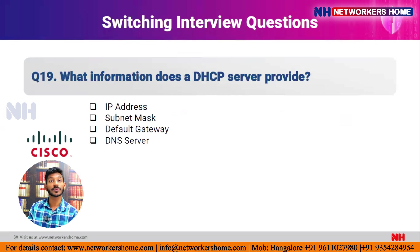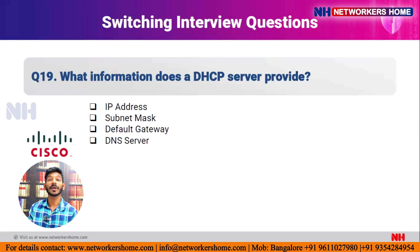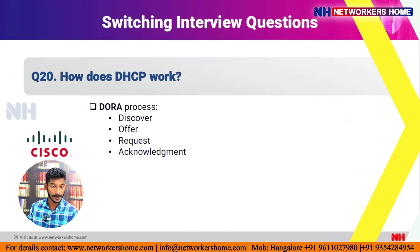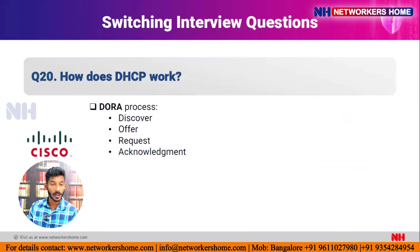Question eighteen: what information does a DHCP server provide? A DHCP server provides four pieces of information: IP address, subnet mask, default gateway, and DNS server address.